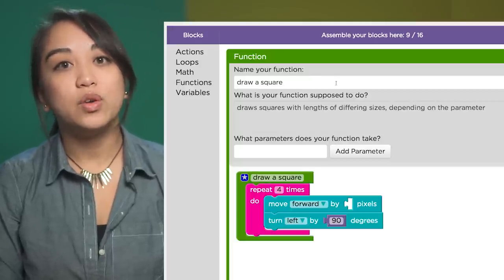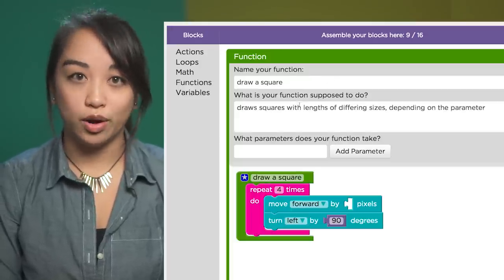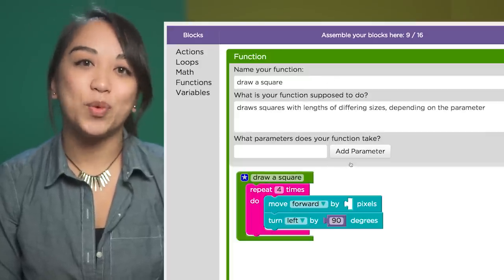In the function editor, you can edit the name and description like before, but now you can also add a parameter.